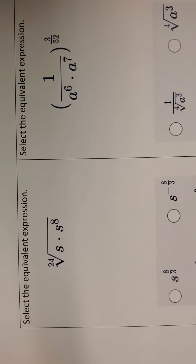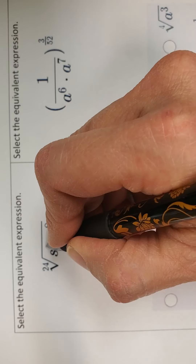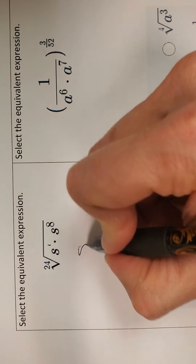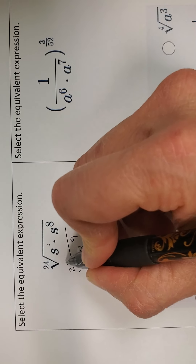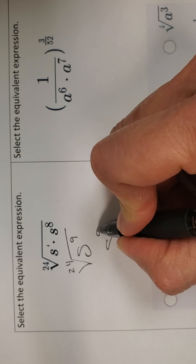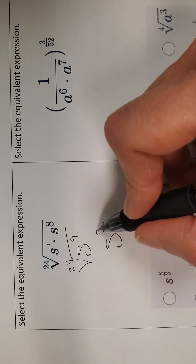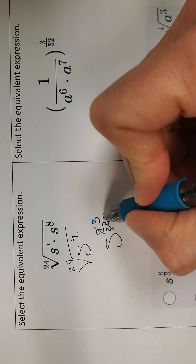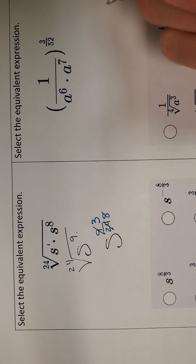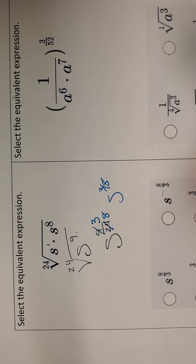A couple more and then we'll call it quits. There's a 1 there if you don't see it, and it's multiplication, so I add: 1 plus 8 is 9. The second step is to change it: 9 over 24 is my numerator and denominator, but that reduces. 3 goes into 9 three times and into 24 eight times, so I end up with s to the 3 eighths — so that would be this answer.